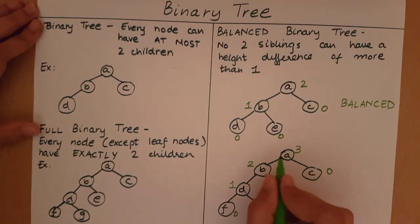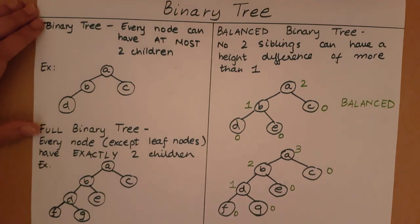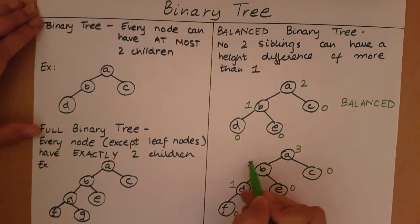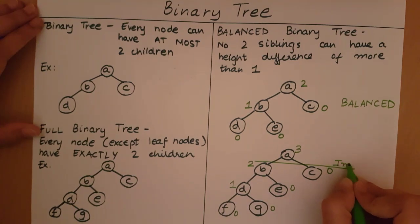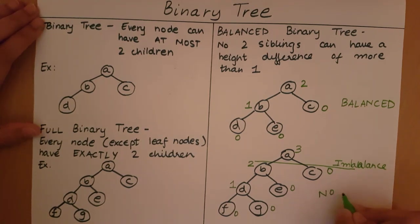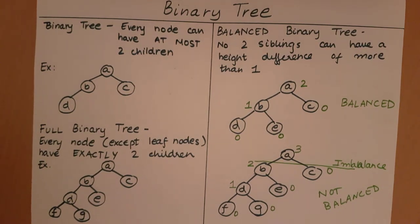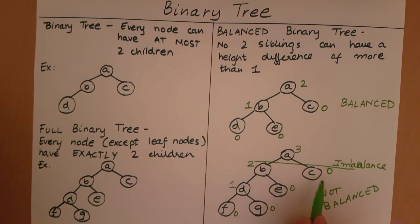B and C are siblings from parent A. The height difference between B and C is two, which is more than one — so there is an imbalance at this level. This is where the imbalance is detected, and therefore this tree is not balanced because the height difference between siblings B and C is two. With this, we come to the end of a basic introduction to binary trees and their variations.